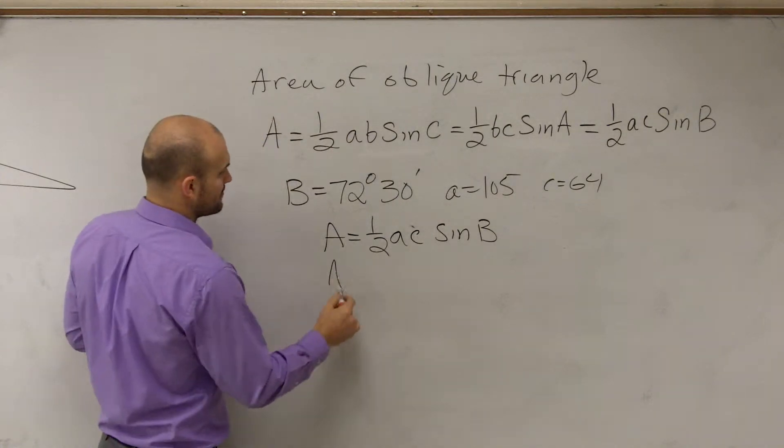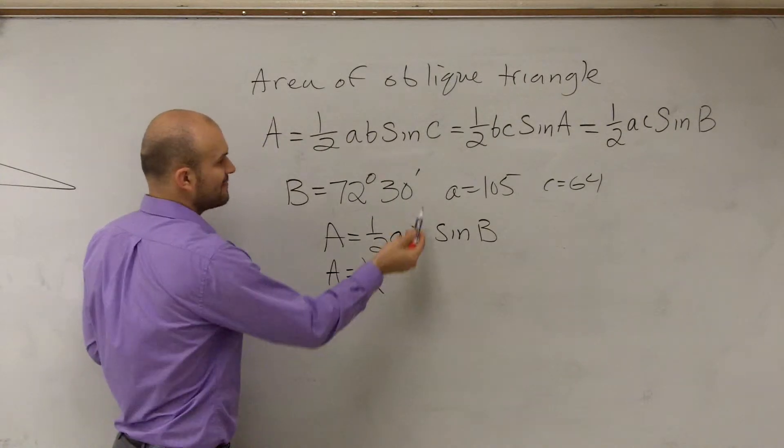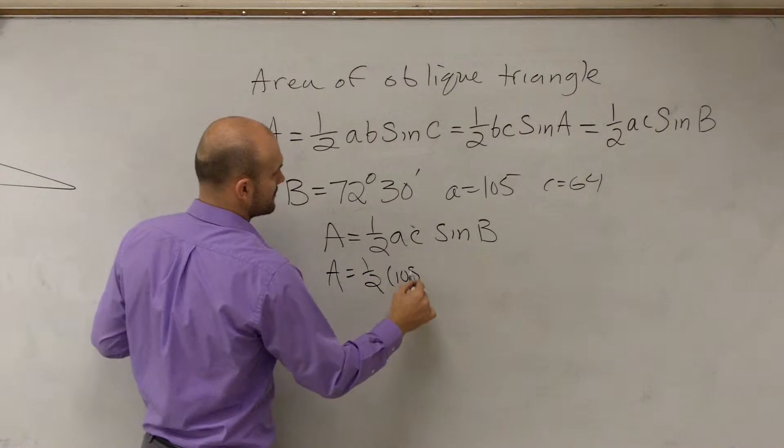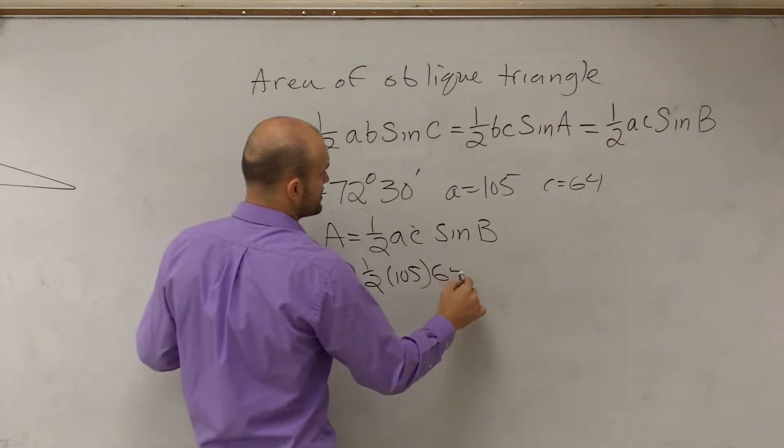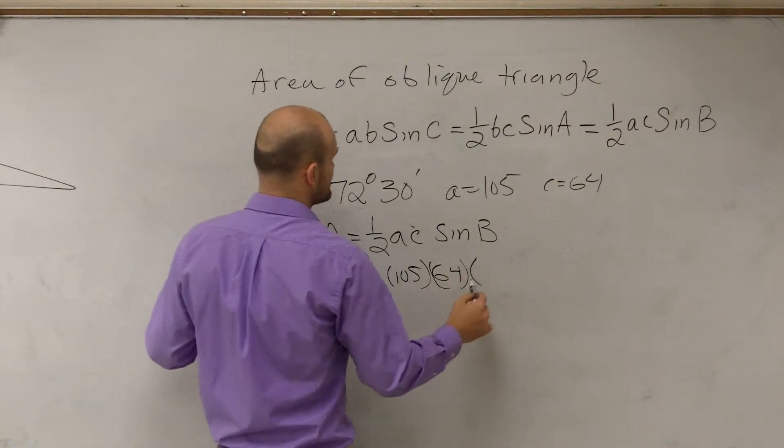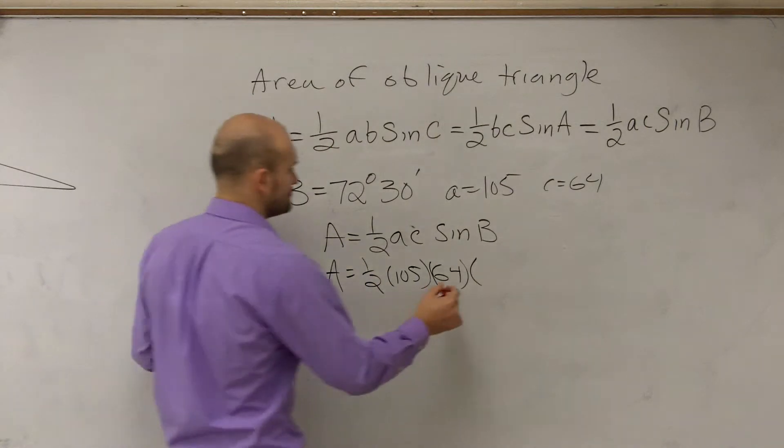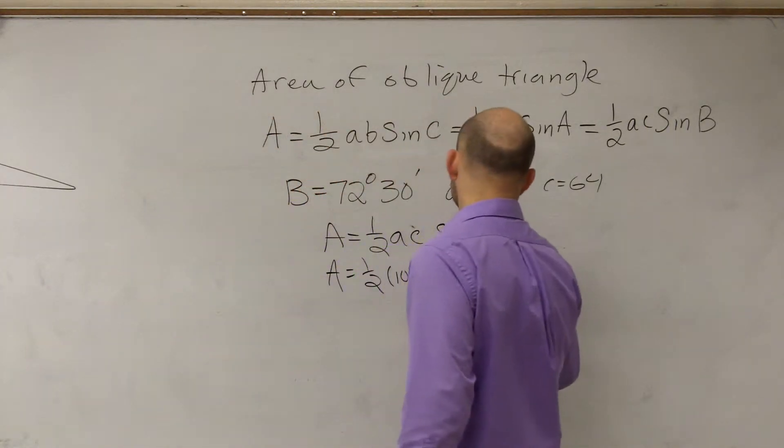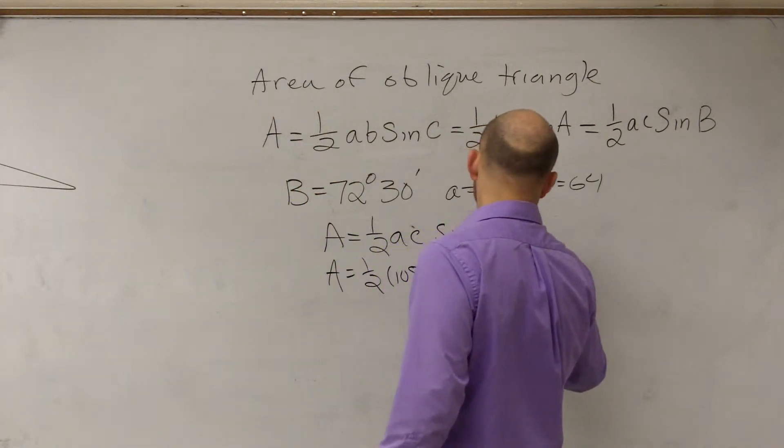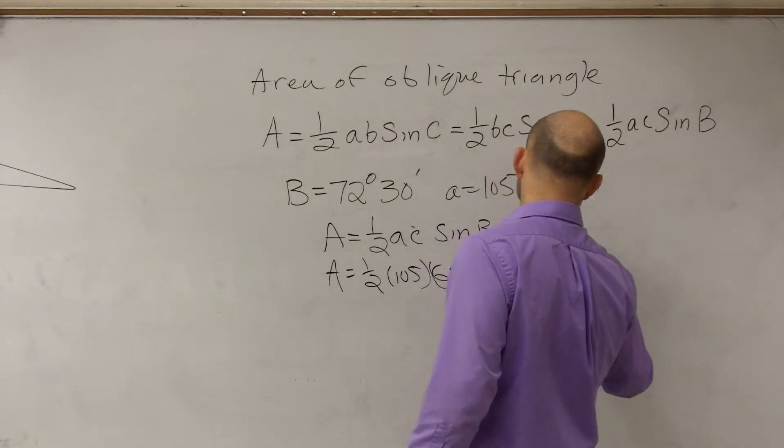Now we just plug in the values that we're given. A equals 1/2 A, which is 105, times C, which is 64, times sine of B, which is 72 degrees and 30 minutes.